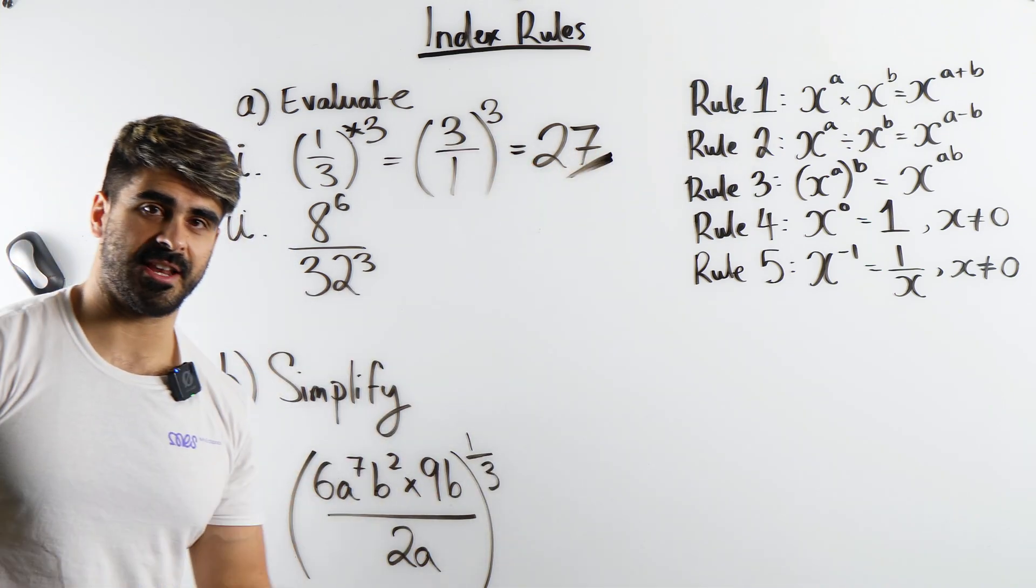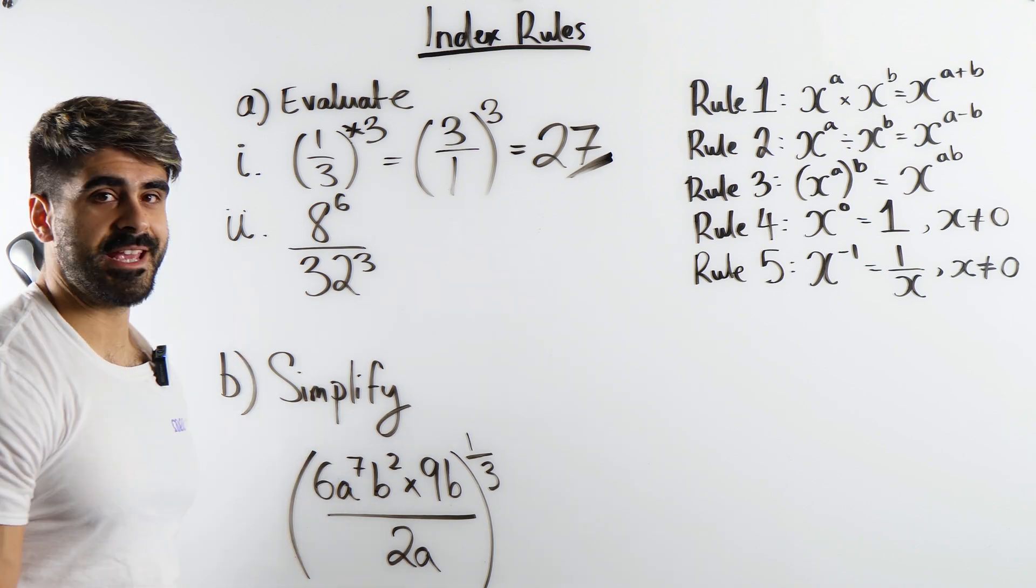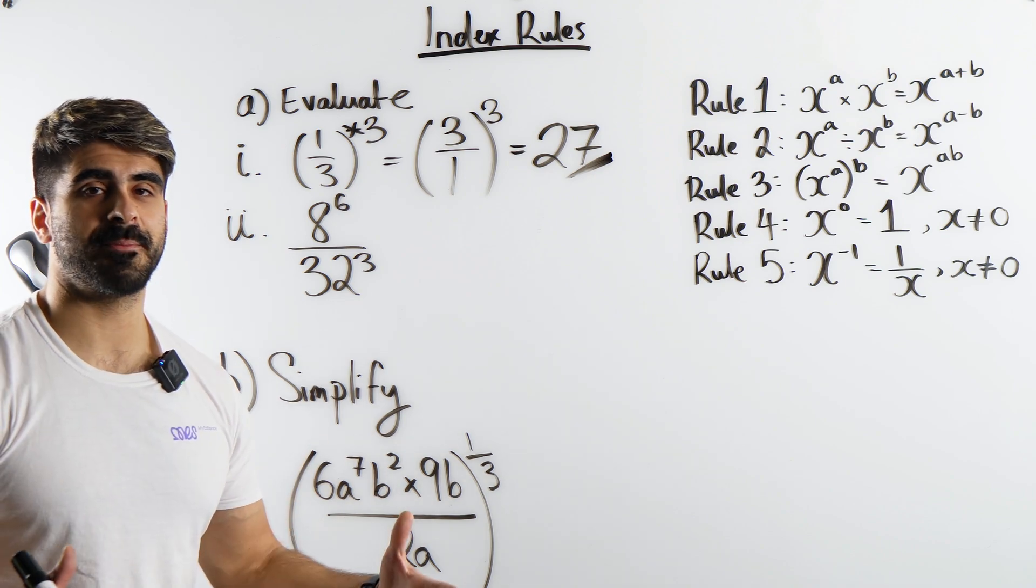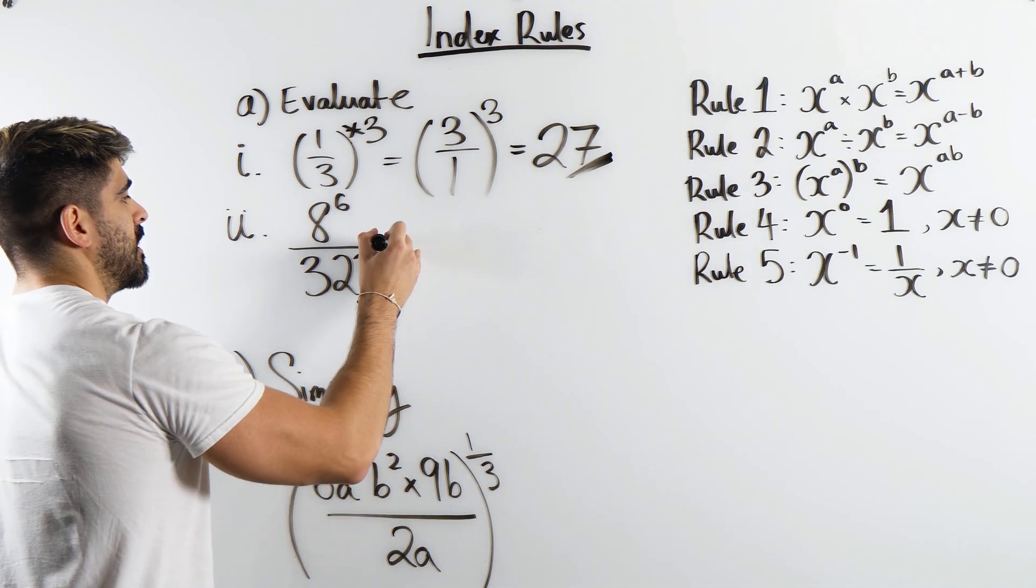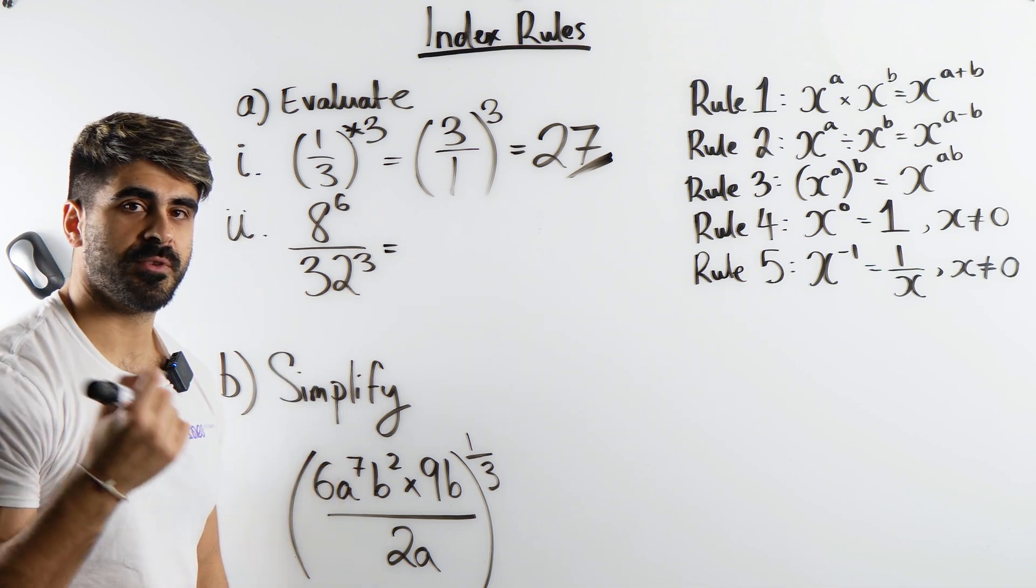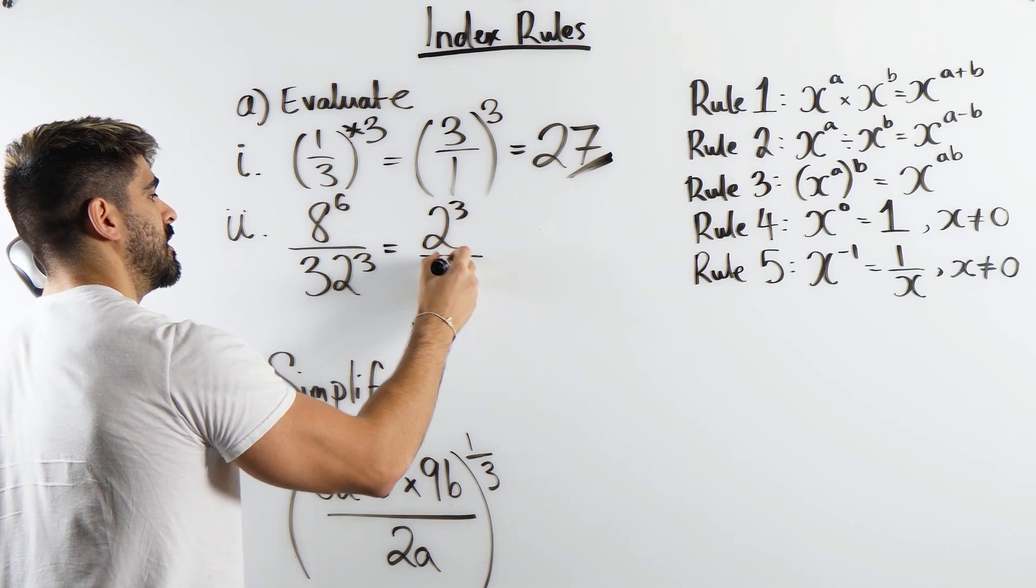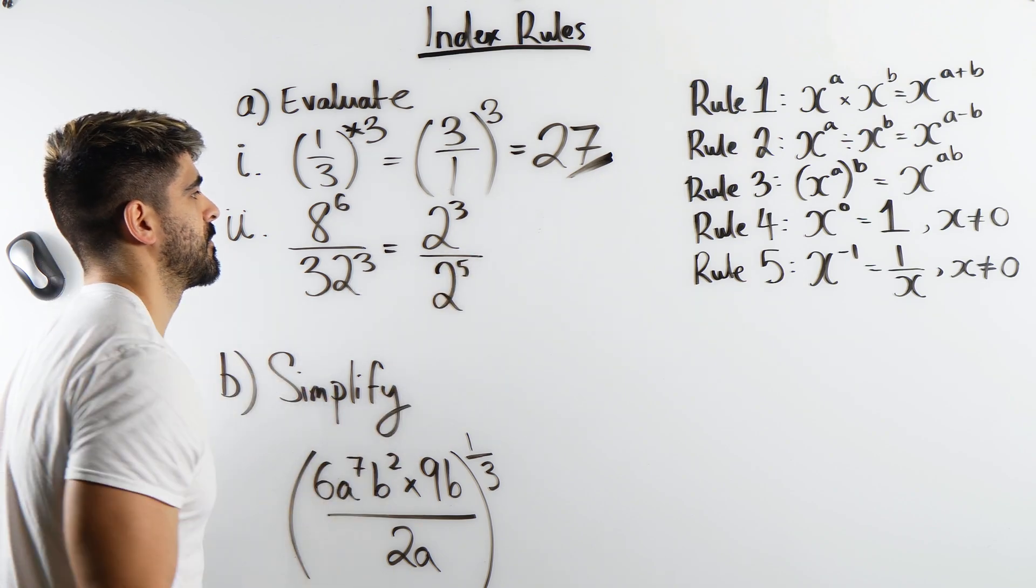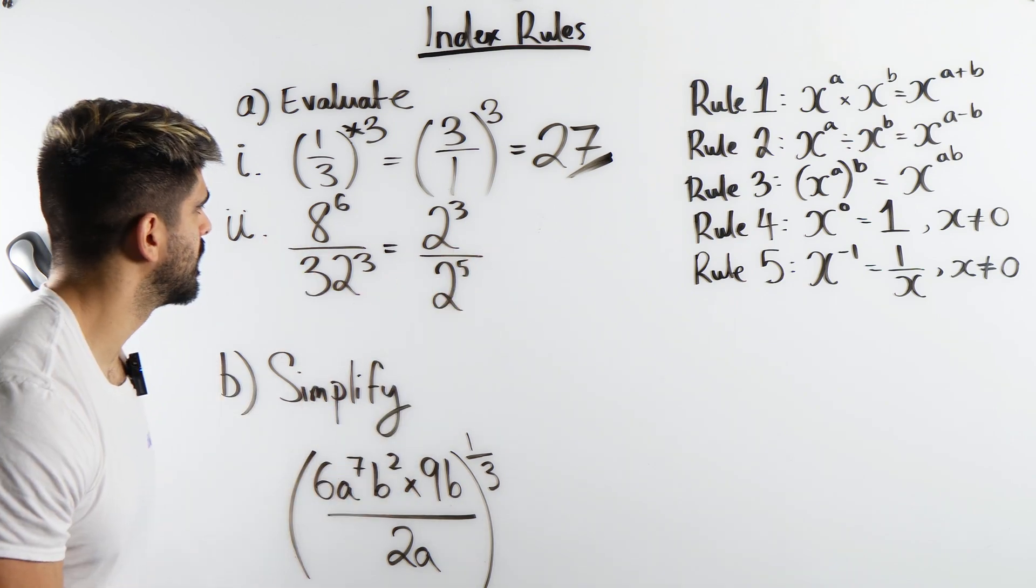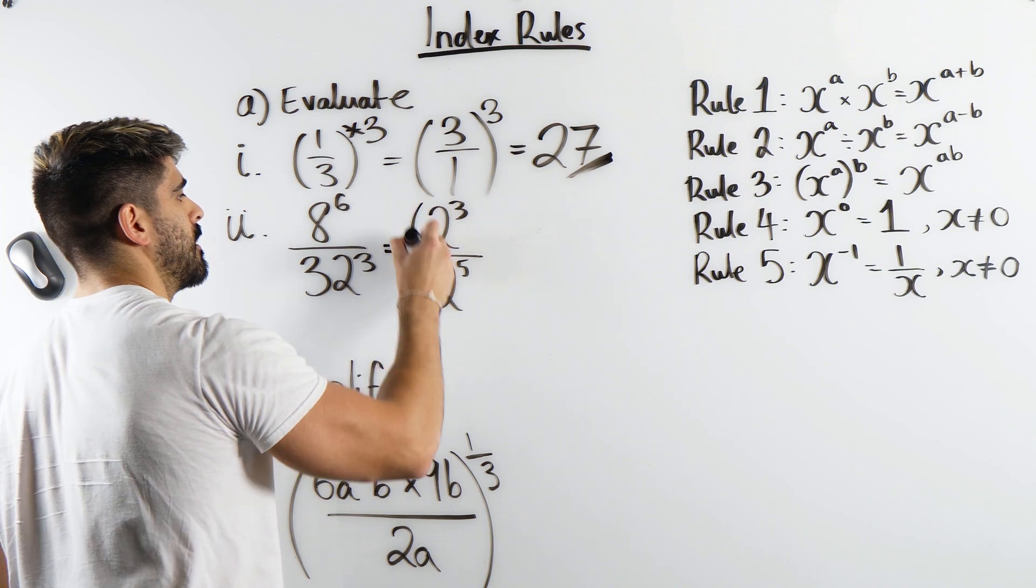Now if you're in a non-calculator paper, how are you evaluating this? One thing's for sure is you're not doing 8 multiplied by itself 6 times and you're not doing 32 multiplied by itself 3 times. What you do is you notice that both of these numbers are powers of 2. 8 is 2 cubed and 32 is 2 to the power of 5. If 2 cubed is 8 times another 2, 16 times another 2, 32. But remember there's the power 6 and the power 3, so we need to use a bracket.